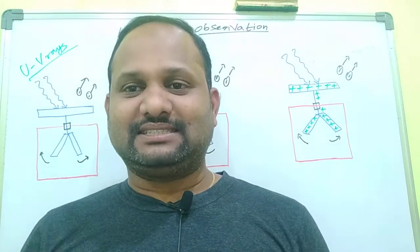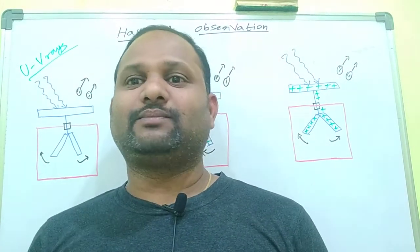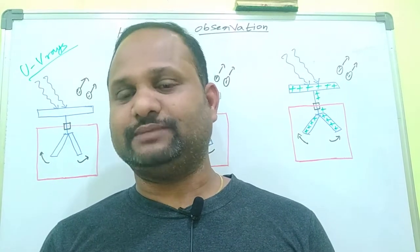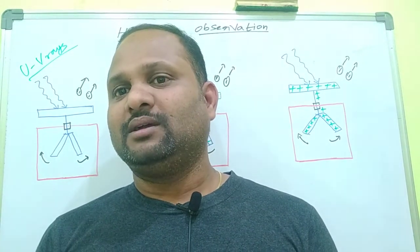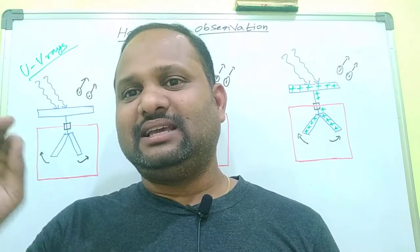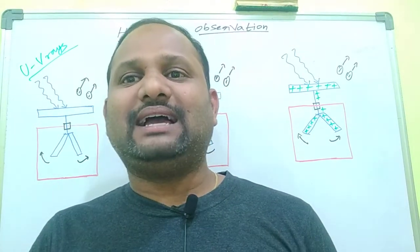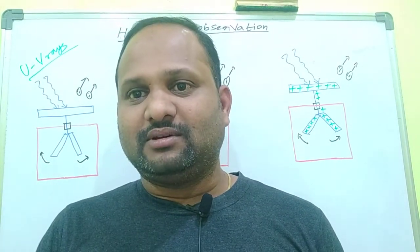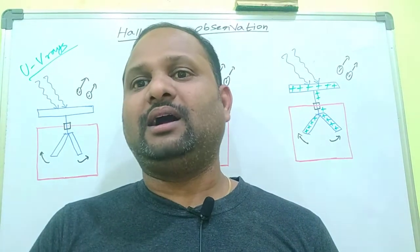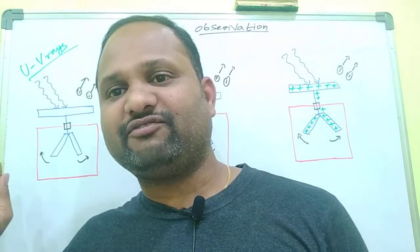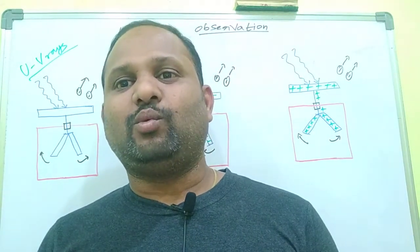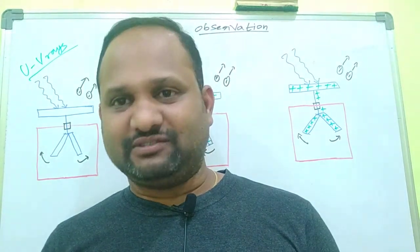Welcome back to the class of physics. This is Ramesh. In this class we are going to discuss about Hallwock's observation. He is a German physicist. He gave the explanation for the spark produced in the Hertz experiment with the action of ultraviolet rays. What are his observations?